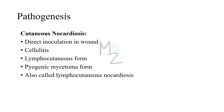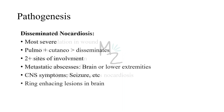Disseminated nocardiosis is the most severe form. It occurs when pulmonary or cutaneous nocardiosis spreads to other body parts, notably the brain, involving more than two sites. For example, if it starts in the lungs it will spread to the brain and other parts — that is more than two sites. It forms metastatic abscesses in the brain or lower extremities. In the brain, additional symptoms include seizures and ring-enhancing lesions.